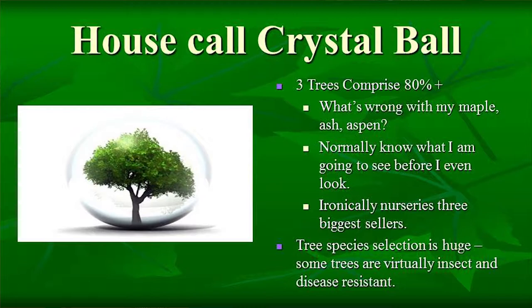I do a lot of house calls, and if I look at my crystal ball, 80% of my calls are about what's wrong with my aspen, my maple, or my ash tree — and I normally know what I'm going to see before I even go out. Oddly enough, those are three trees I don't recommend planting, but you go to a nursery and they're big sellers. My business model is caring for trees until they're mature and healthy. Know the potential problems a tree may have before planting.